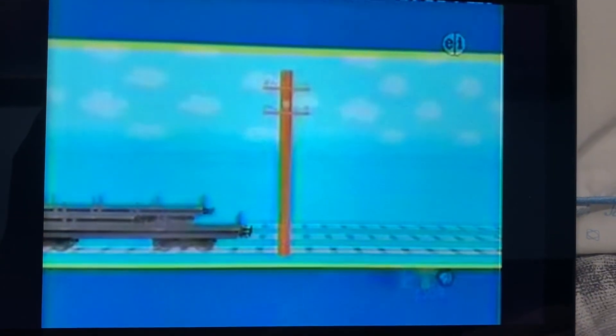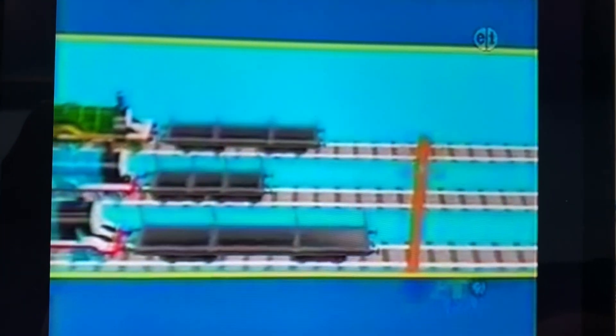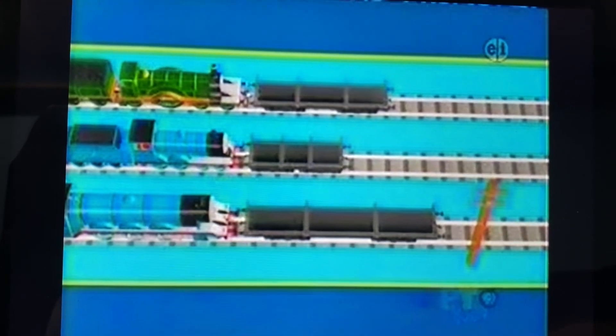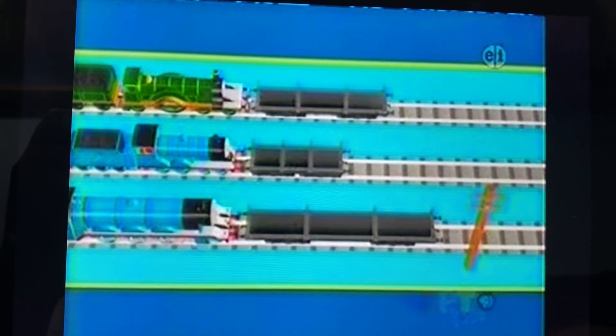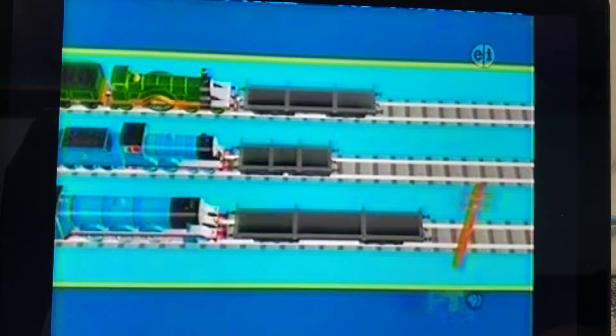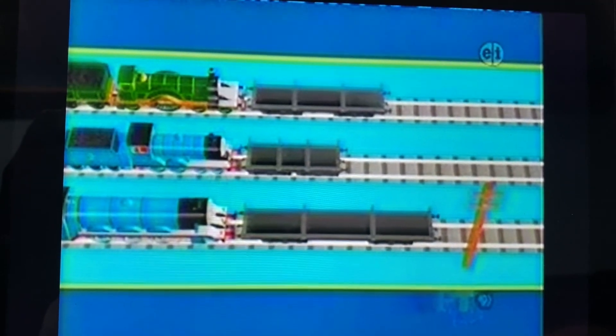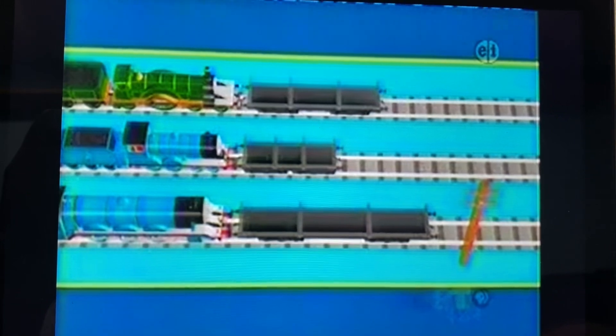This telegraph pole needs to be taken to the docks. Gordon, Edward and Emily all want to do the job. But only one of their flatbeds is exactly the same size as the telegraph pole. Can you tell which one it is?